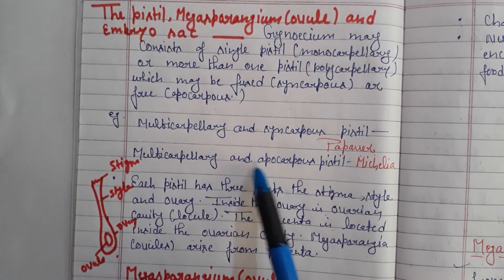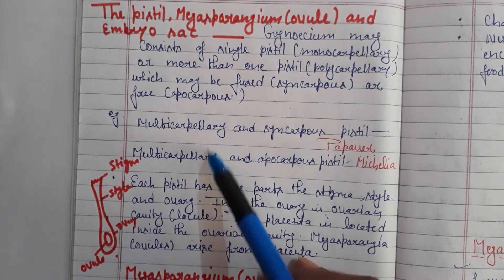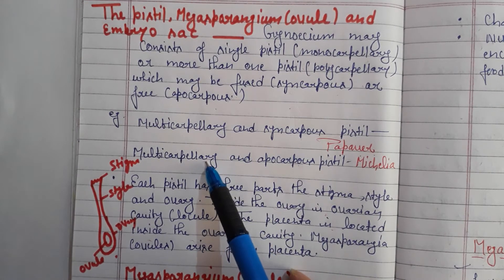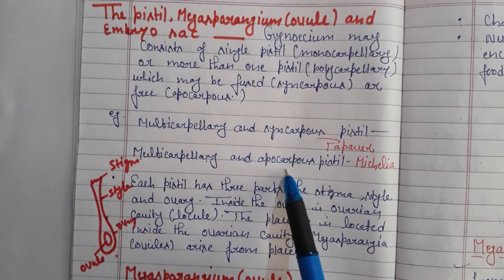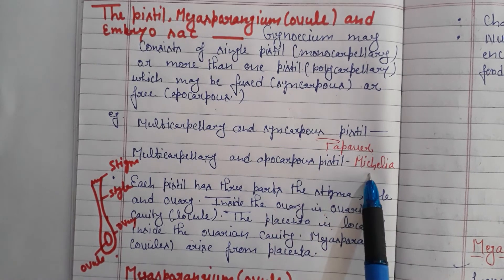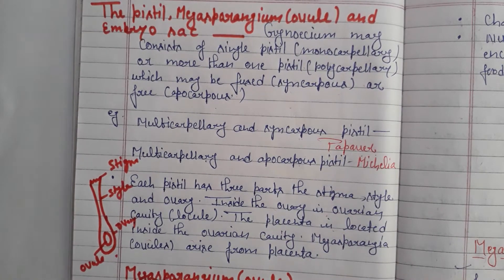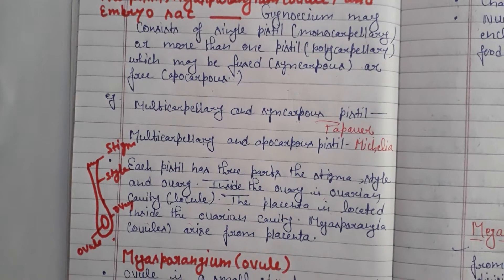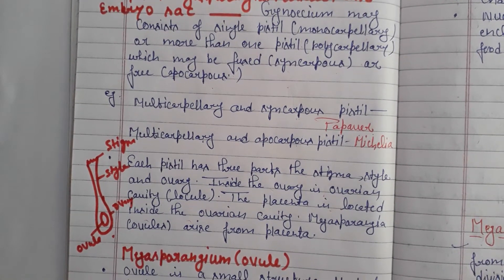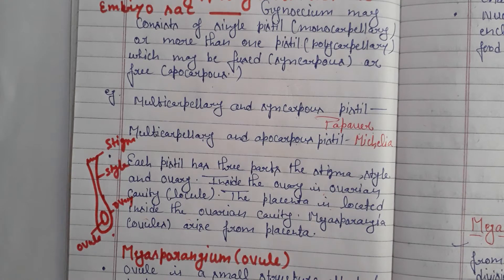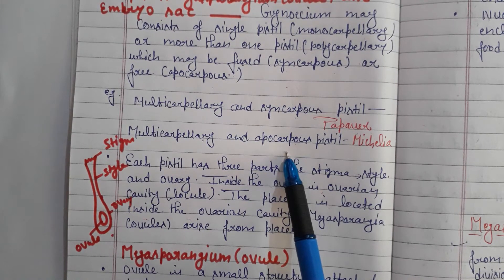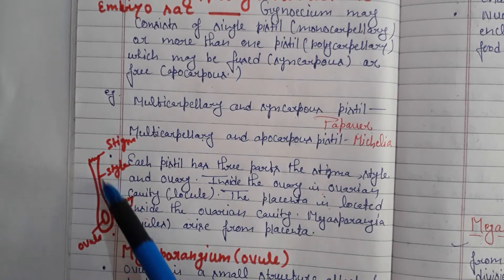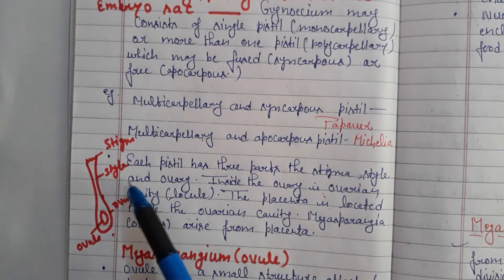Next, multi-carpillary and apocarpous means the carpels are free and not fused with each other. There are flowering ornamental plants where the gynoecium is free — this is why it is called apocarpous.